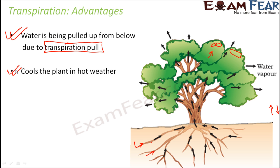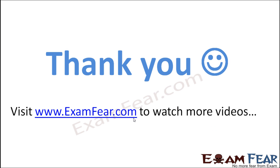The same thing happens with plants. Pores are present on the leaves called stomata, and transpiration happens through these stomata openings. Since water is constantly coming out of them, they create a cool environment around the plant. The entire plant stays cool during hot weather, helping it adapt to high temperatures during summer. These are the two important advantages of transpiration.